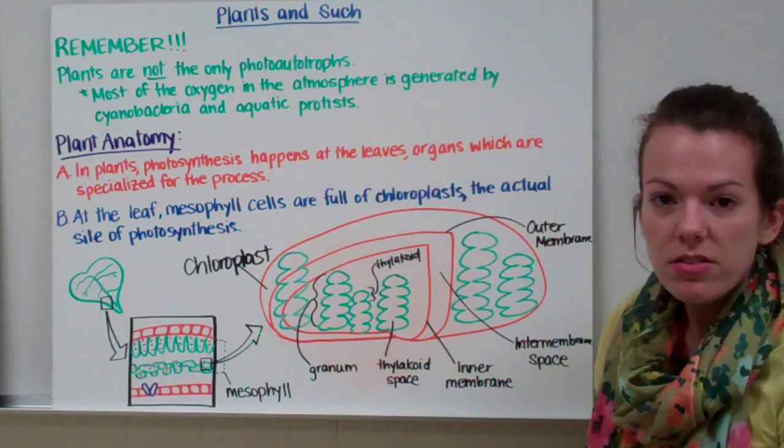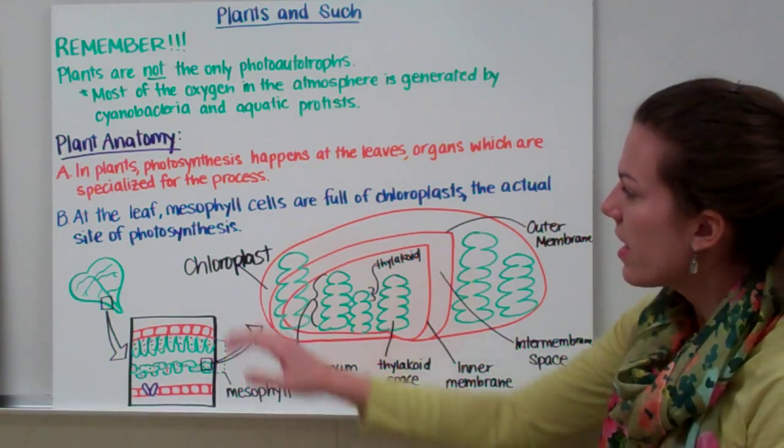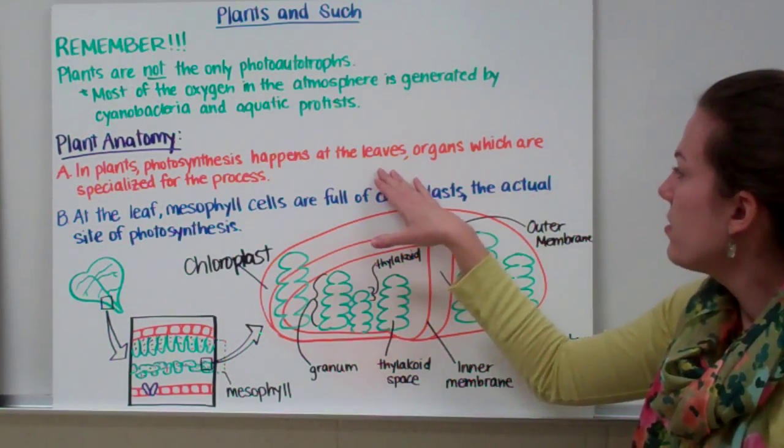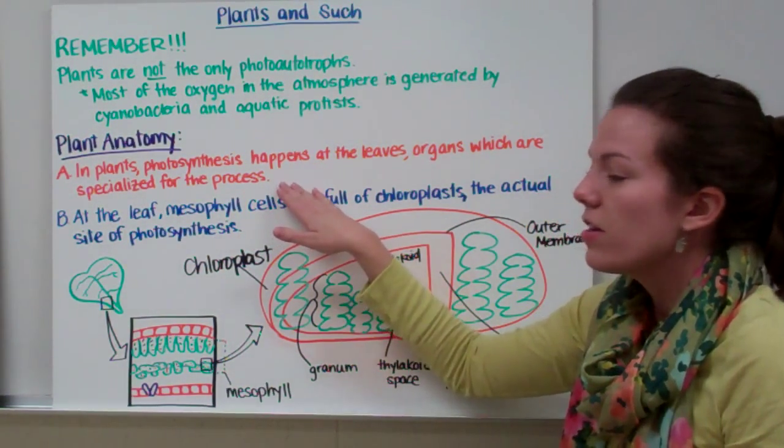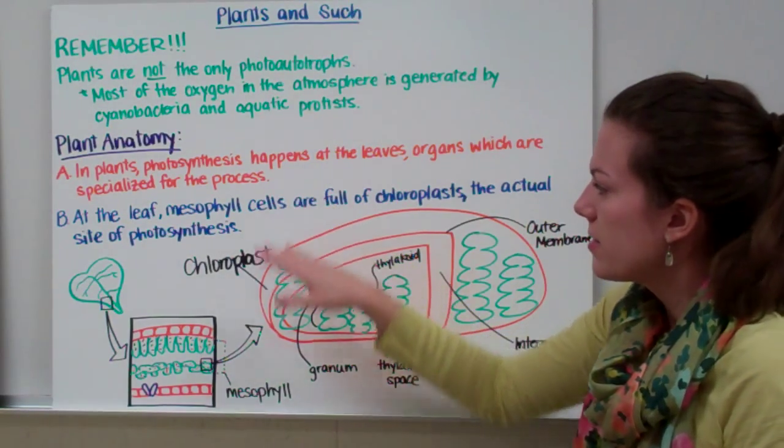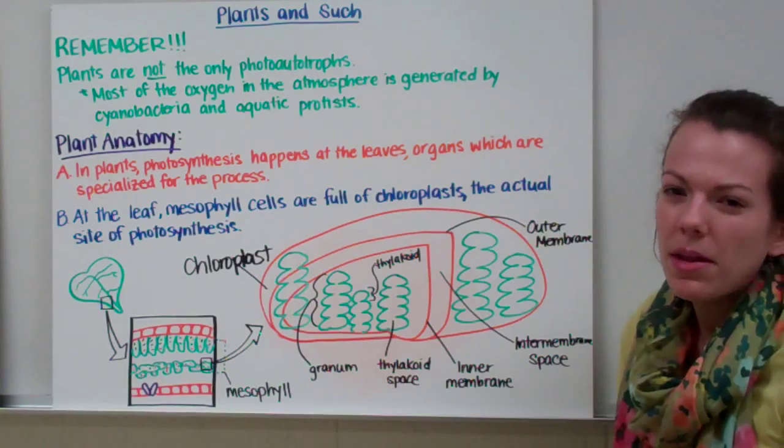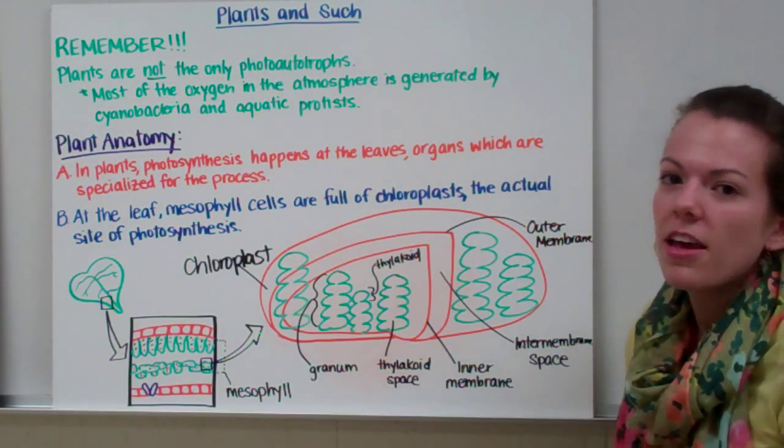Let's look at where photosynthesis happens in a plant. So let's take a look at plant anatomy. In plants, photosynthesis happens at the leaves. Leaves are the organs which are specialized for the process of photosynthesis. So photosynthesis isn't mostly happening in the stem or the root. It's happening at the leaf.